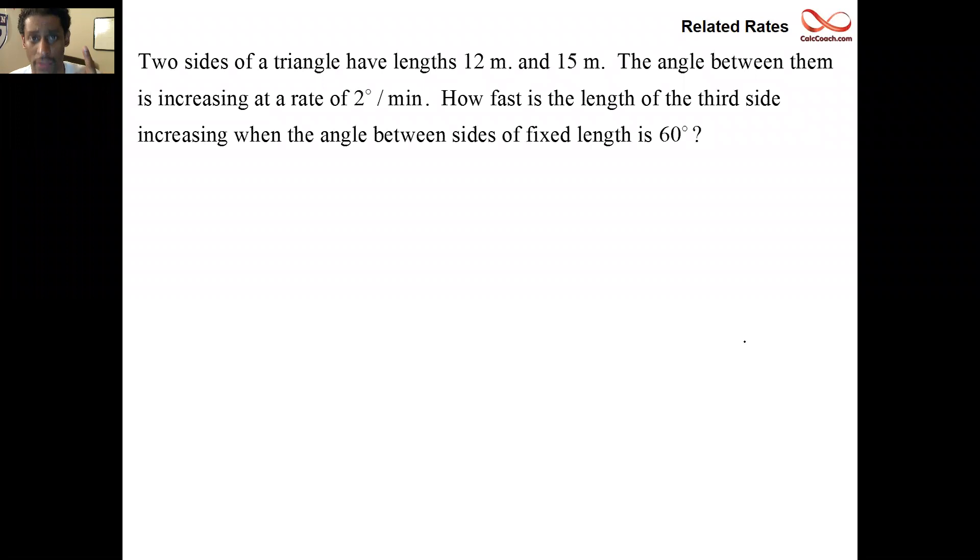All right, we have another related rates example. This is about a triangle, which is not necessarily a right triangle, where two sides of the triangle are going to be constant. They are known to be 12 and 15. Read through the whole problem, draw something as you're reading. So label one side 15, the other side 12, doesn't matter.